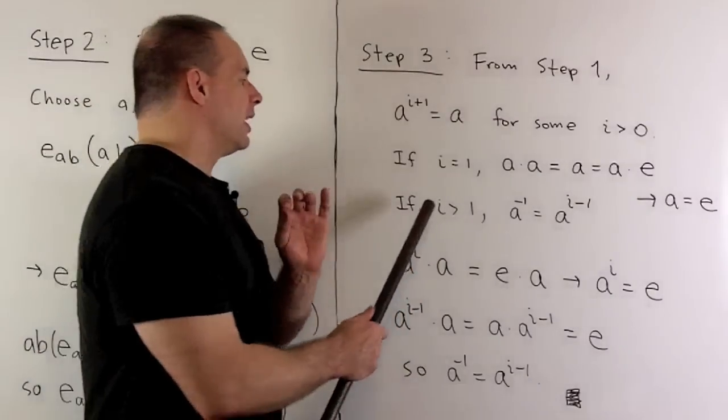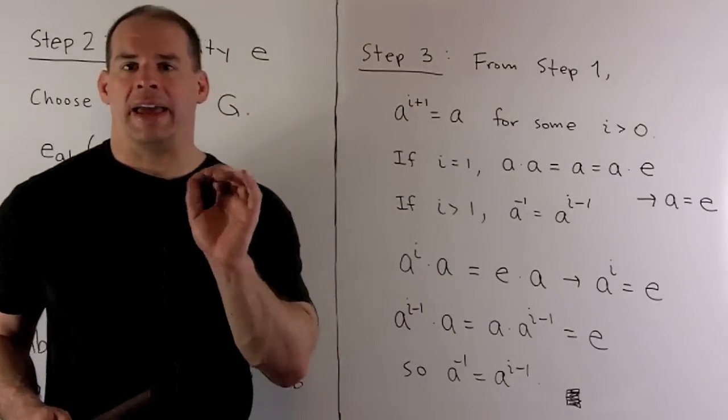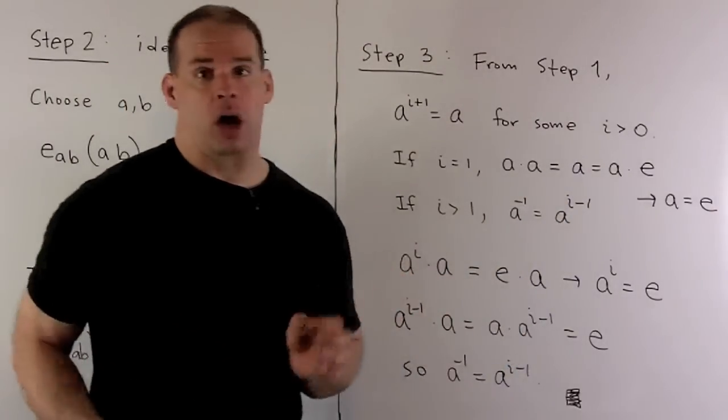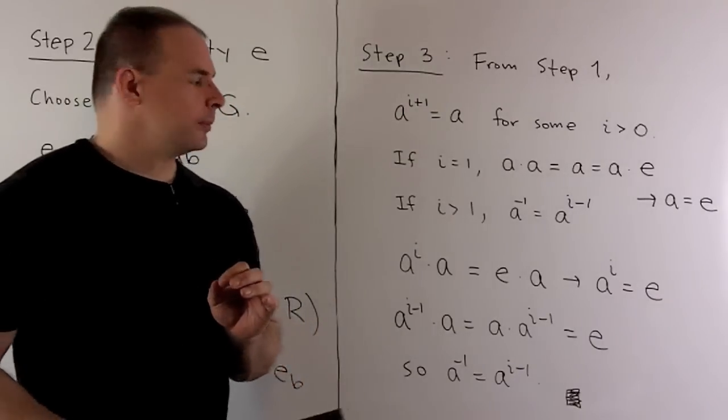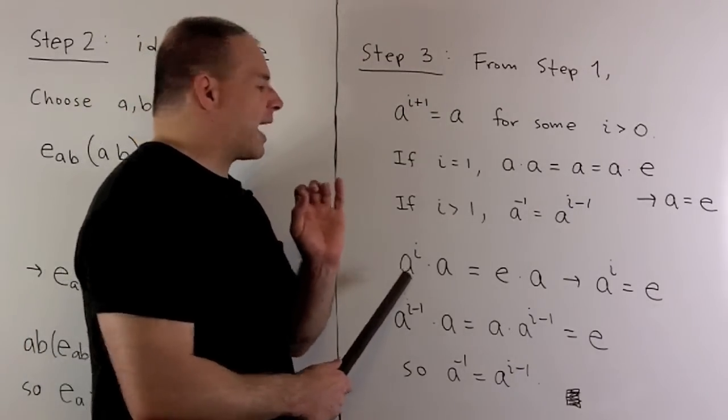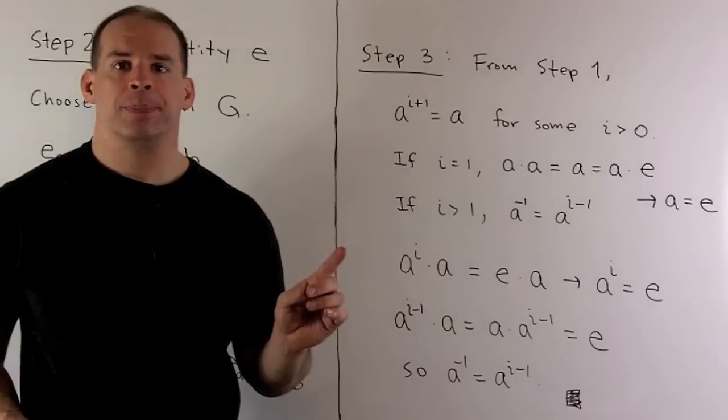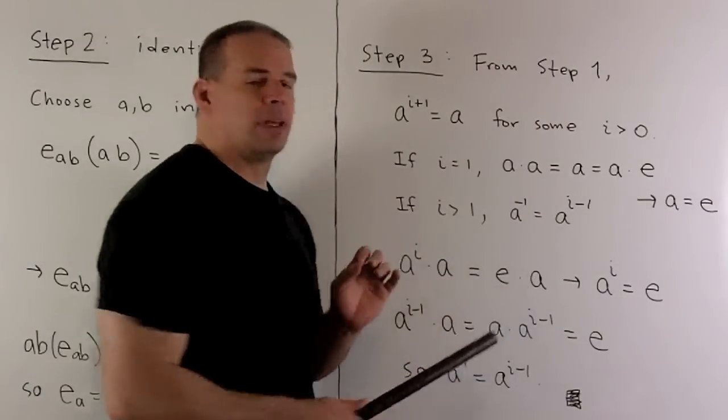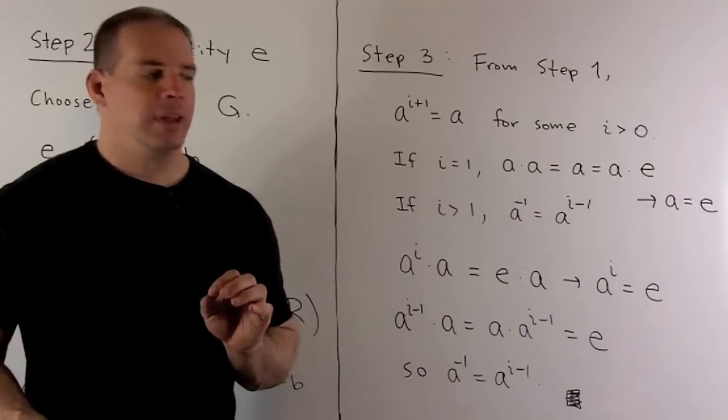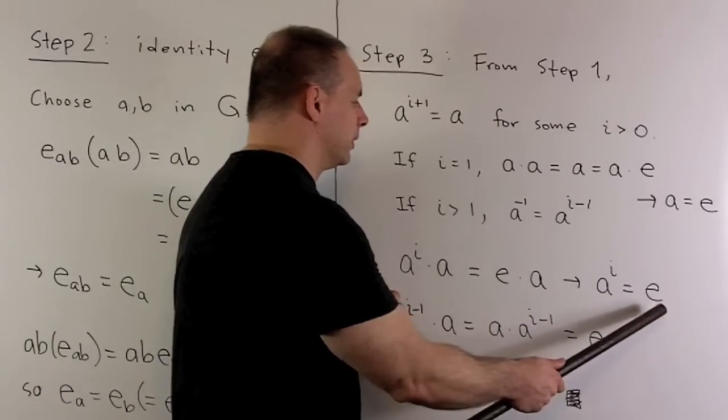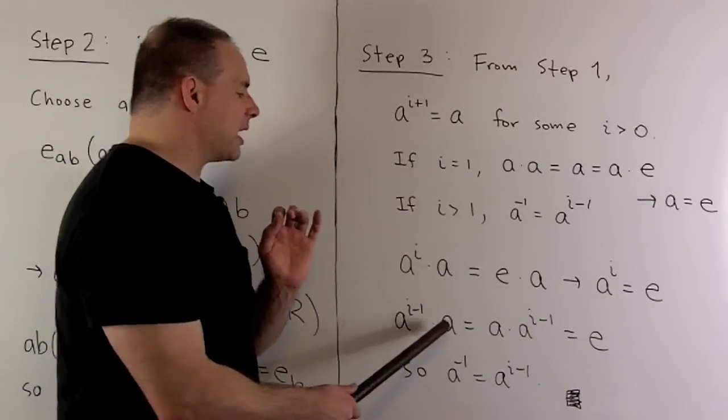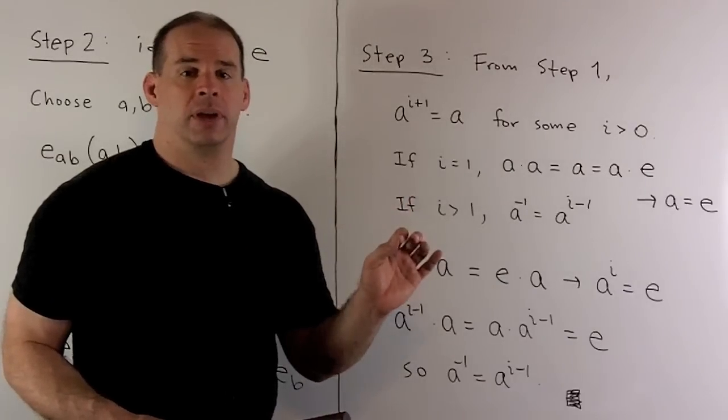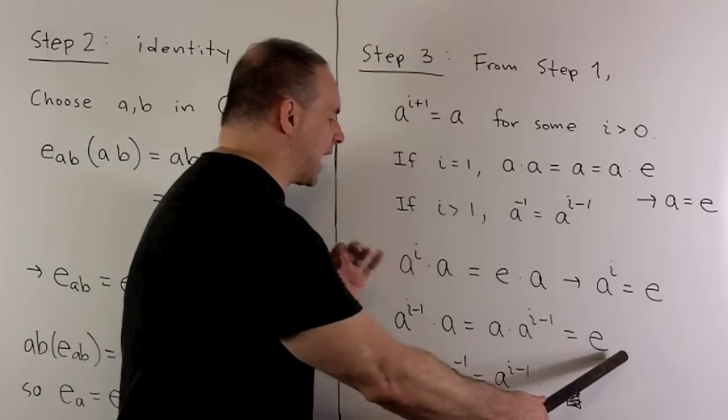Now, if I is strictly bigger than one, we'll call A inverse equal to A to the I minus one. And this exponent is one or larger. Now, let's take a look. So, I have A to the I plus one is equal to A. So, I'm going to rewrite that as A to the I times A equals E times A. Cancel an A on the right. That gives me A to the I is equal to E. Now, you'll note A to the I minus one times A equals A times A to the I minus one is equal to E. So, if we call this A inverse, it's going to satisfy exactly what we want.